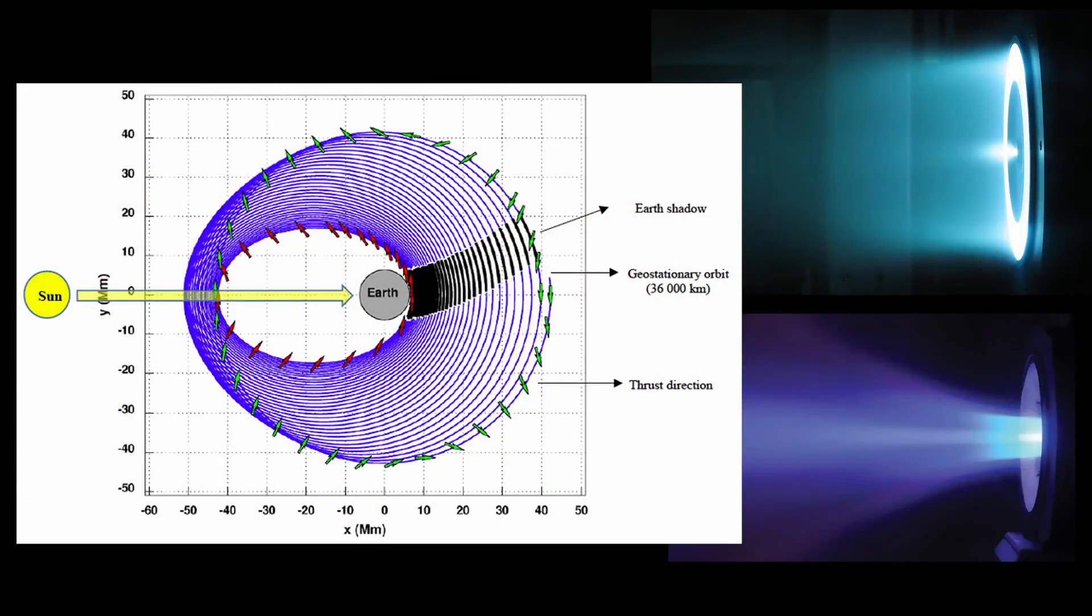Most modern satellites use electric thrusters that are very efficient, but have very low thrust. Because of the low thrust, the orbit cannot be adjusted at the apogee. Instead, there is a complex approach where the thrust direction is changed throughout the orbit to achieve the desired orbit efficiently. It takes many orbits and months of time to complete this maneuver.